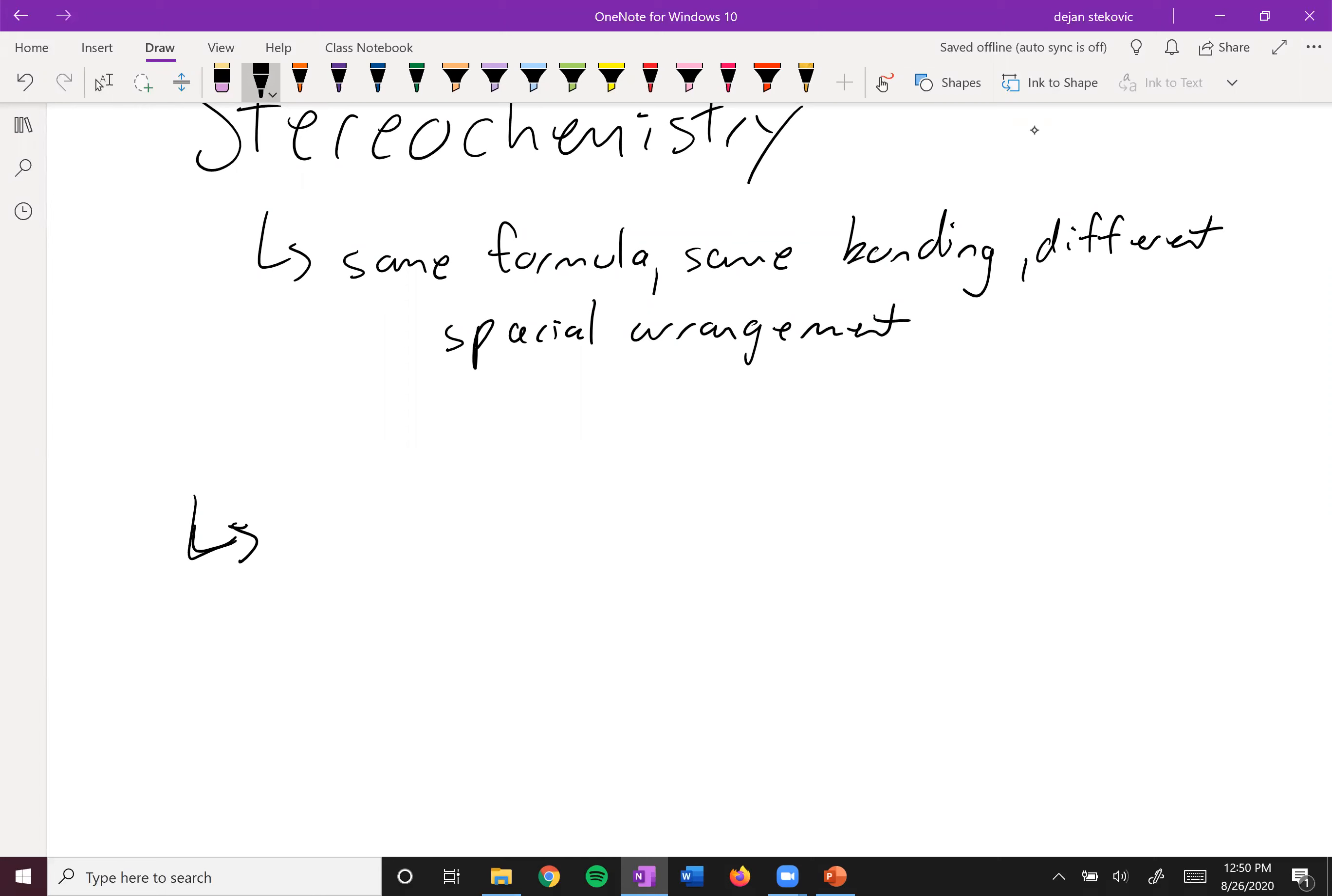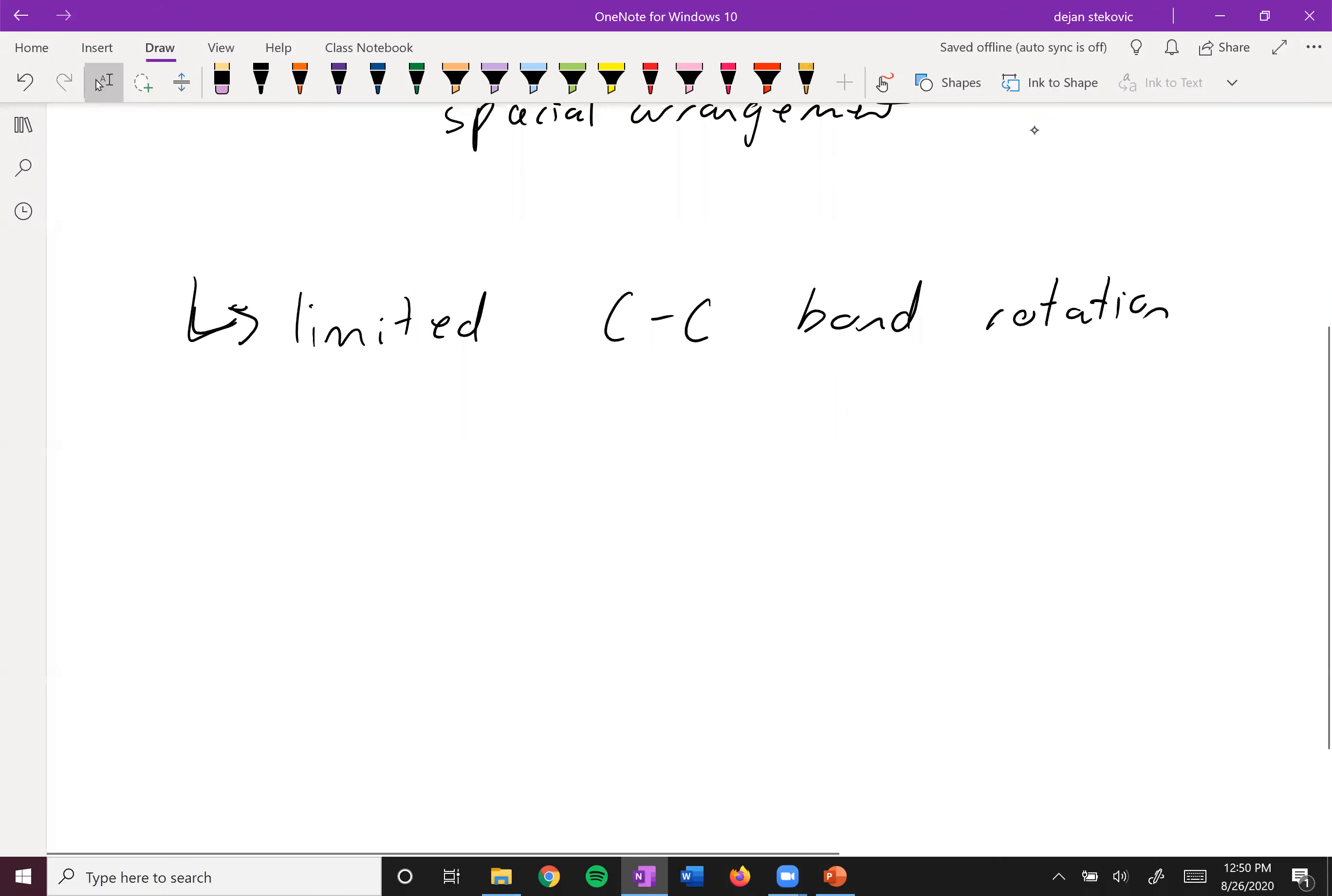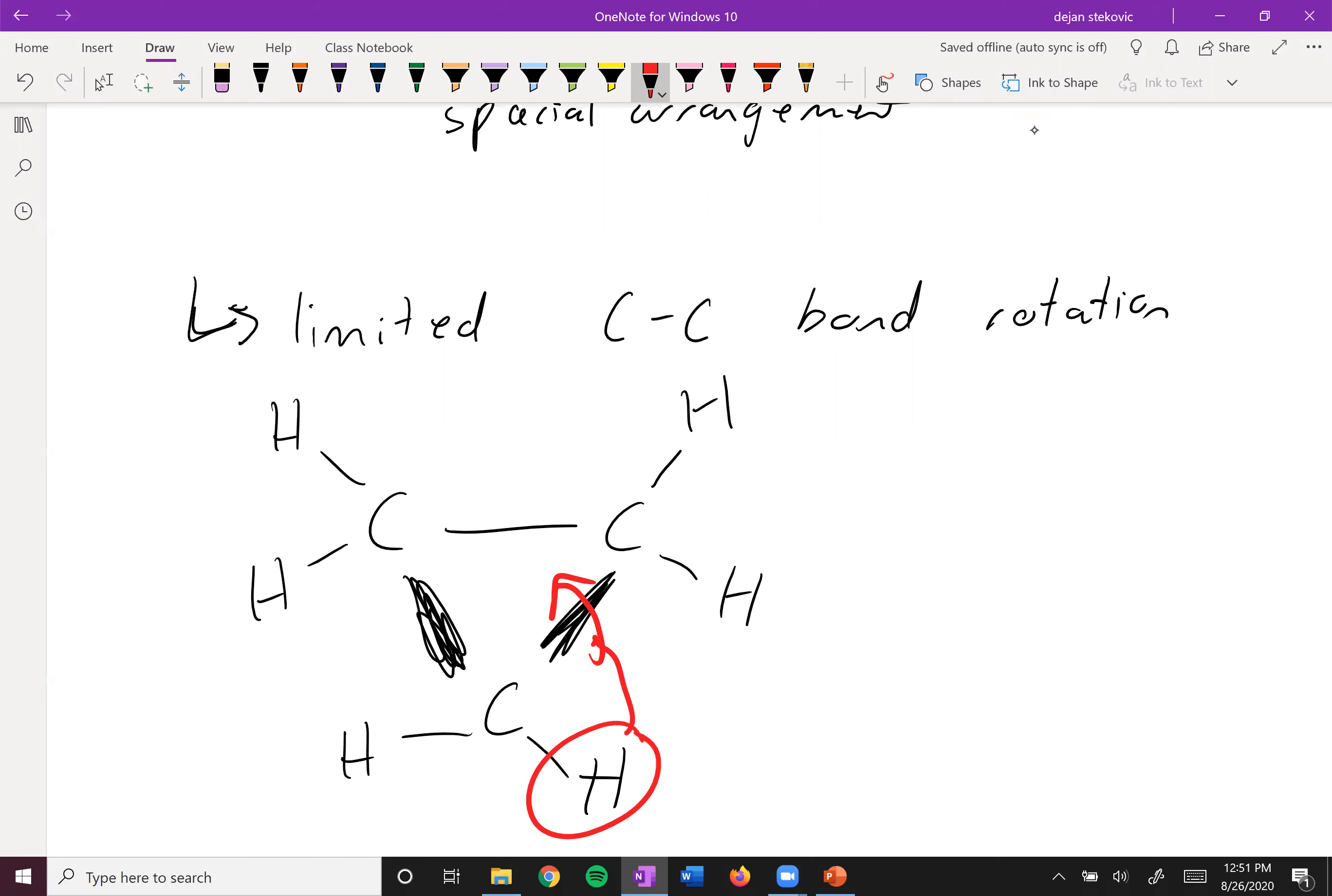With these cycloalkanes we end up with some stereoisomers, and that's because we have limited carbon-carbon bond rotation. For example, if we have our cyclopropane, we got this one carbon kind of coming out of the board and then we have our hydrogens.